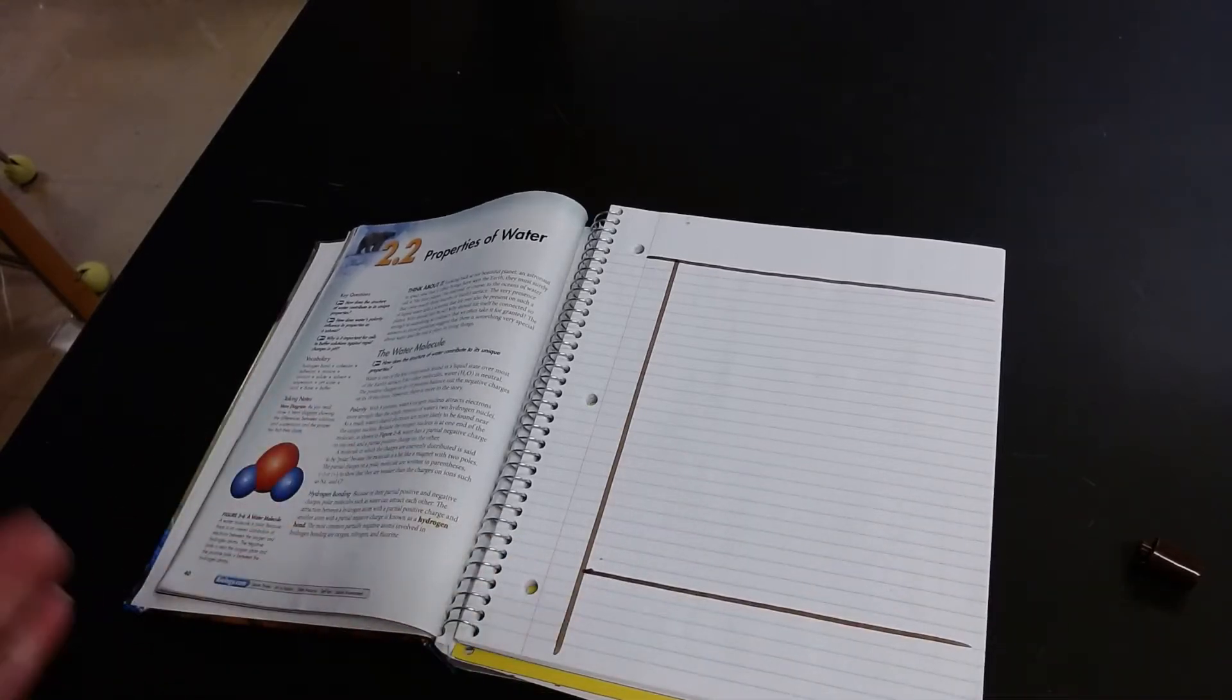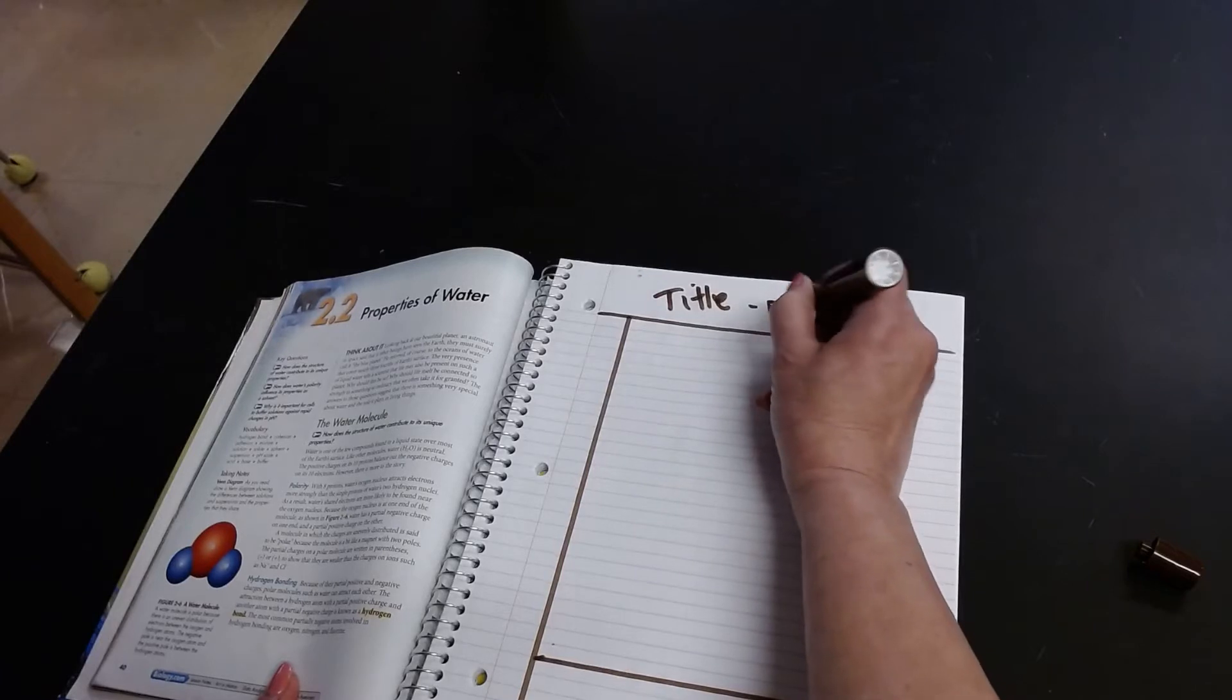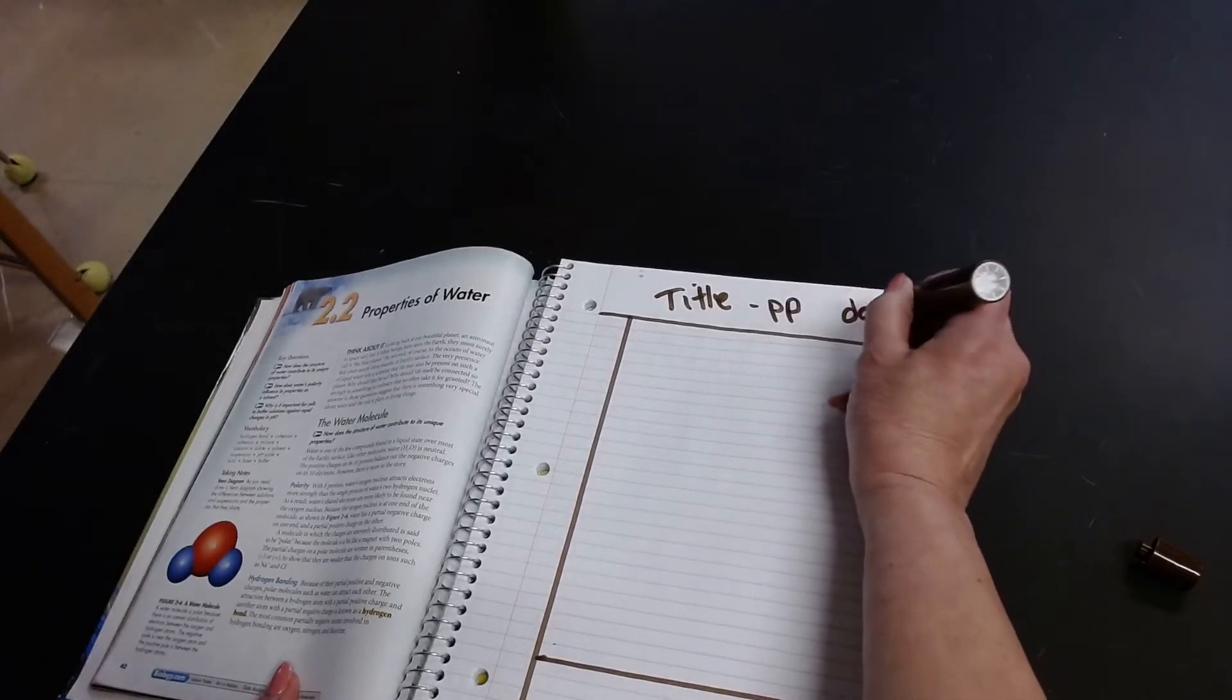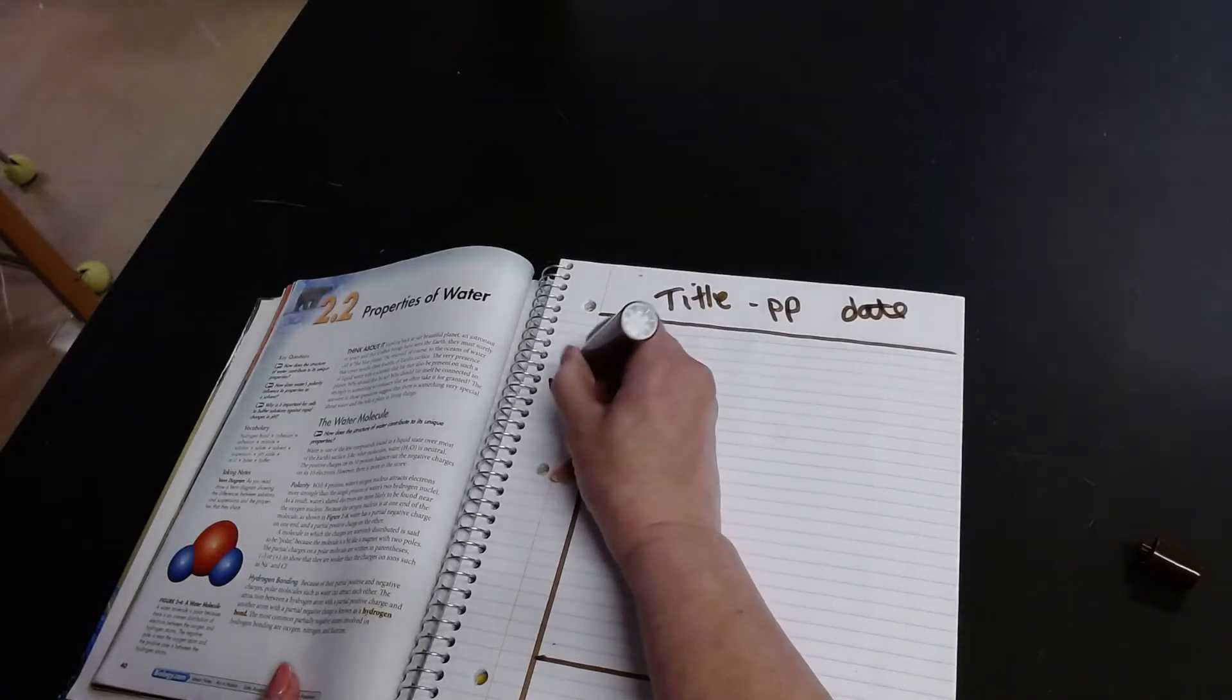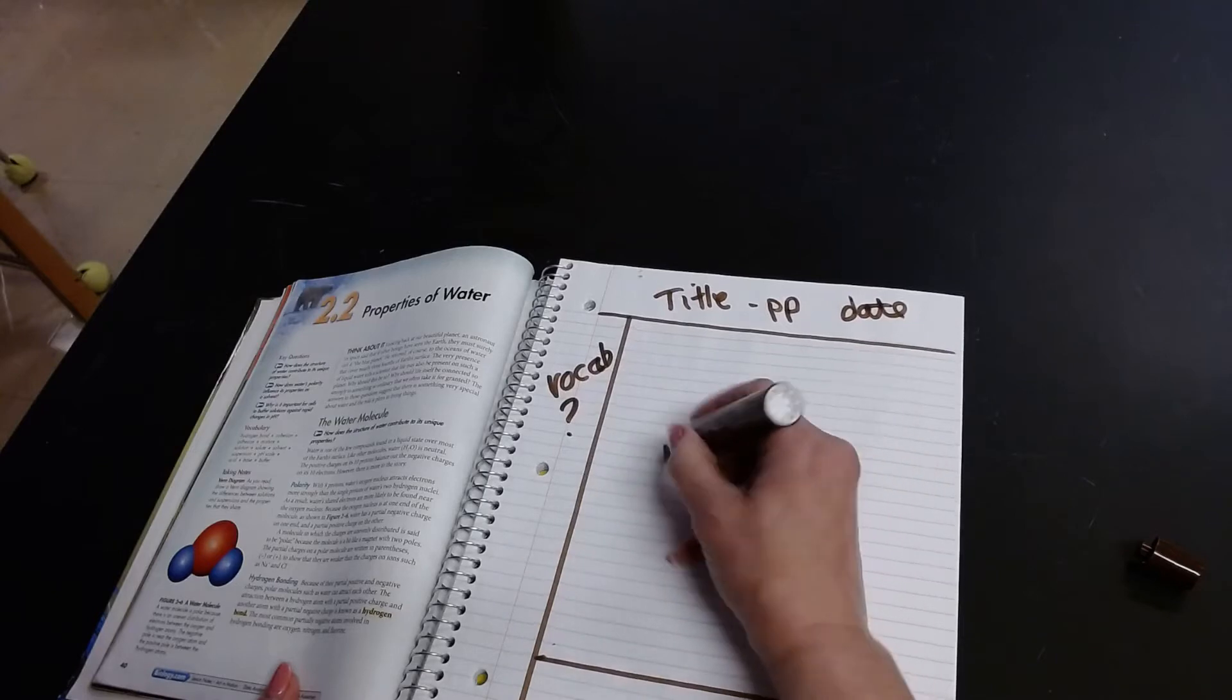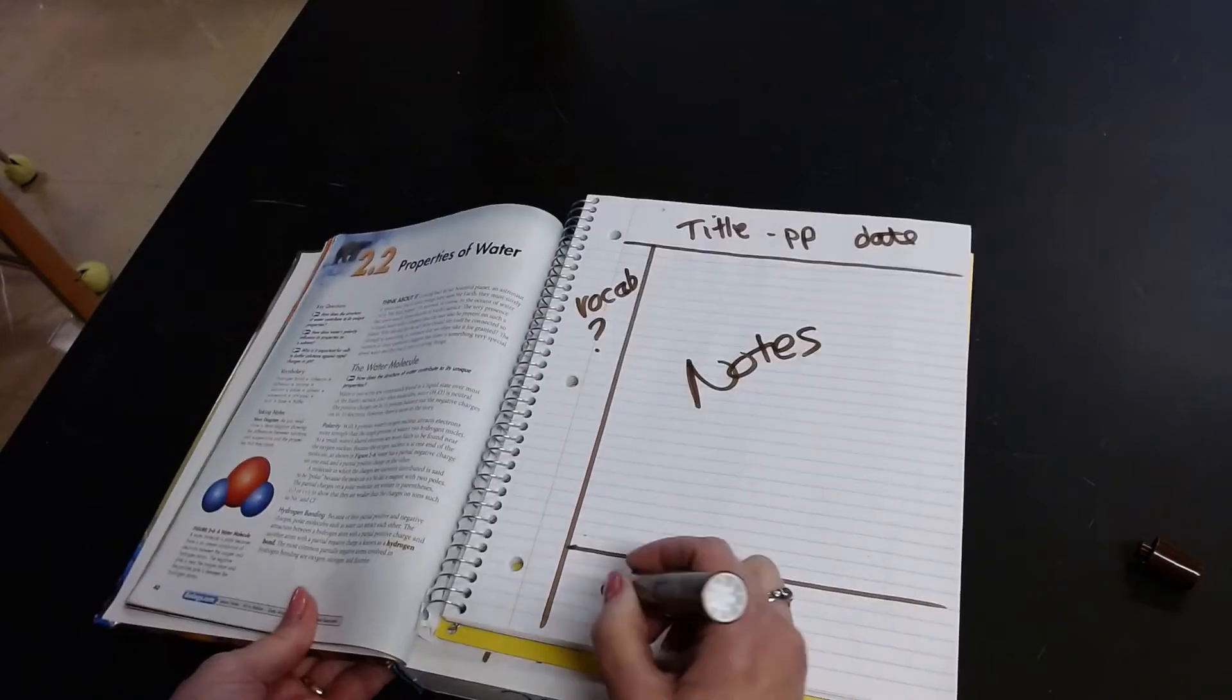So why do I do it like this? In the traditional Cornell method, this is divided up for a couple of reasons. Here we put the title and in my case I also put the page number and the date. Here is where I put traditionally vocab or questions. Here is my major note taking and bullets. And down here is the summary.